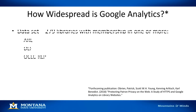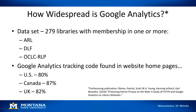How widespread is the use of Google Analytics? In another branch of research for this grant, which will result in a 2018 publication, we looked at a dataset comprising 279 libraries with membership in one or more of the following organizations: the Association of Research Libraries, the Digital Library Federation, or the OCLC Research Libraries Partnership. We found that Google Analytics tracking code exists in website homepages at 80% of those libraries in the United States, 87% in Canada, and 82% in the UK. So Google Analytics use is very widespread among academic library websites.